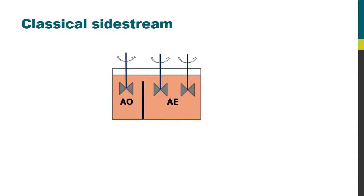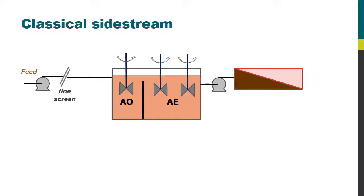So we're back with our sidestream MBR, starting with the process tank with the aerobic and anoxic zones shown there that is fed with wastewater via fine screens of 1 to 2 millimeter rating. The sludge is taken from the process bioreactor and fed directly into some horizontally oriented multi-tube membranes arranged in a long serpentine-like path in order to provide the required conversion.